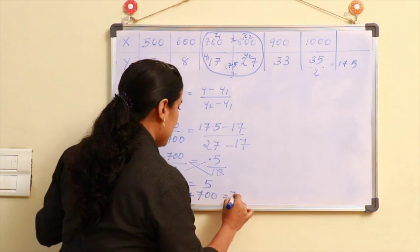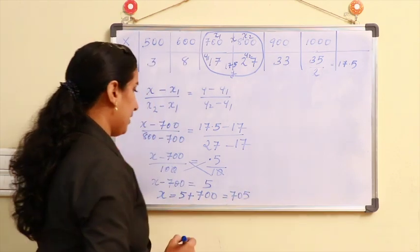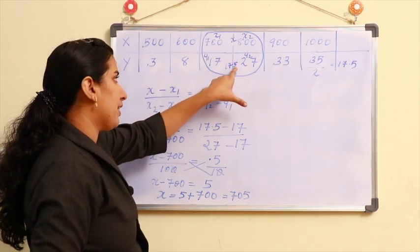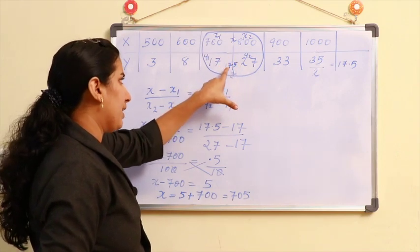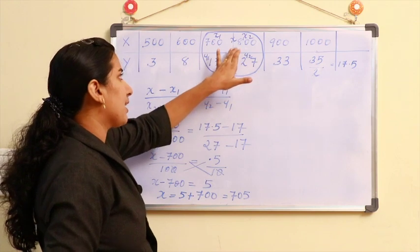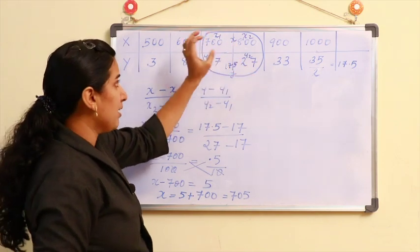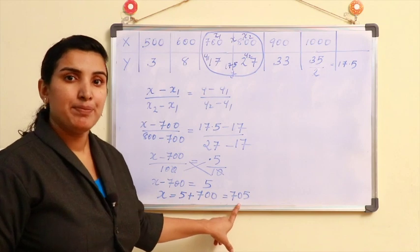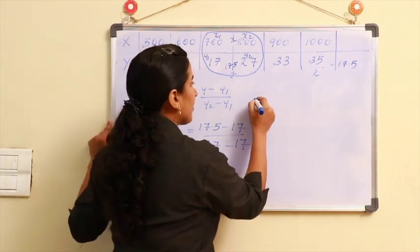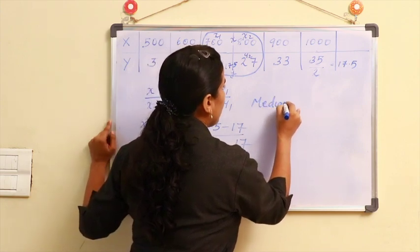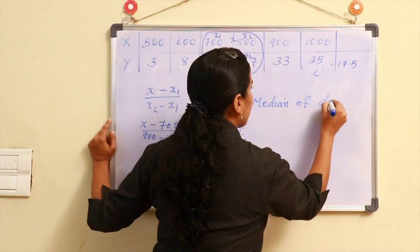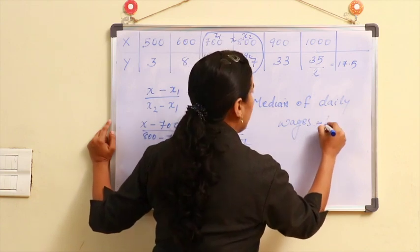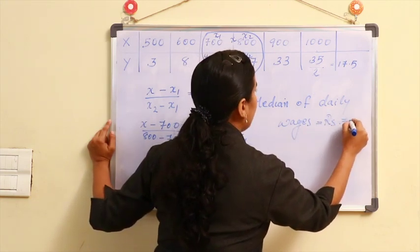This value is 705. The corresponding value for the median position 17.5 is 705. The median of daily wages is equal to 705.